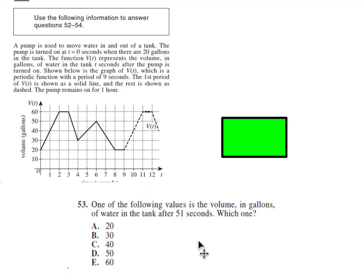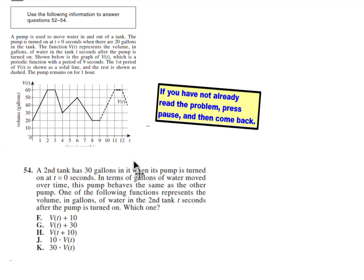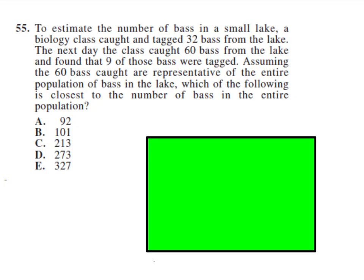Number 53. Again, be sure to read everything. That was a blunder. Let's move on to 54. Make sure you read over all of this. What they're saying is the second tank follows the exact same pattern. It goes up 40, and then down 30, and then up 20, et cetera, except that it starts off at 30 gallons instead of 20. So it's just going to look like that. It starts at 30 and then continues the exact same pattern. So one of the following functions represents the volume in gallons of the water in the second tank. I think it's basically going to be the original function for volume plus 10, because everything is just 10 gallons higher. So the answer will be F.